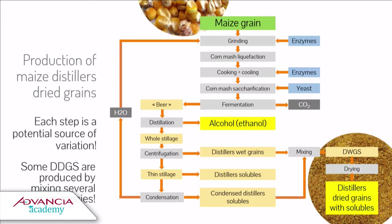Some dried distillers grains are made from different species — maize, wheat, or mixtures of maize, wheat, and sorghum. The result is what we call DDGS: an entire family of products.